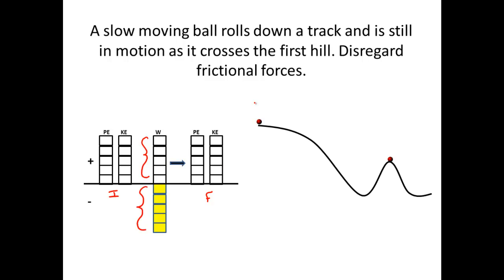In this example, we're looking at a slow-moving ball that rolls down a track and is still in motion as it crosses the first hill. I've set it so that we're going to disregard frictional forces. Over on this side, I have what I would call my initial conditions: the initial potential energy, the initial kinetic energy. We have work here — positive work where energy is put into a system, and negative work where energy is removed. And lastly, this would be the final conditions, referring to the conditions at the top of the second hill.